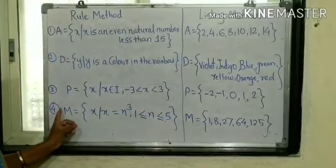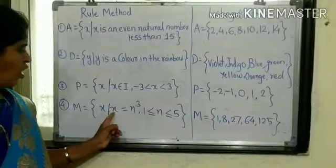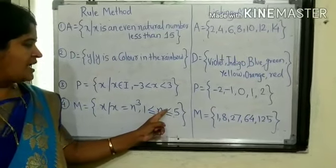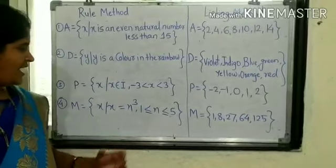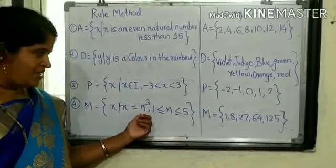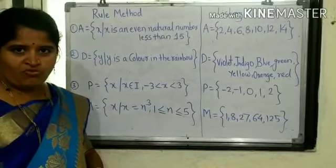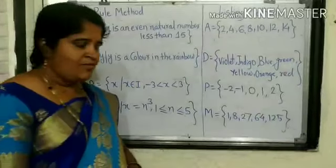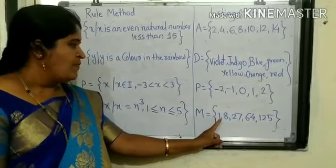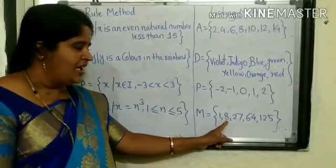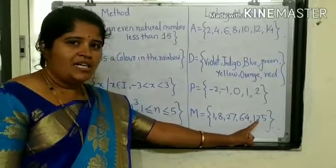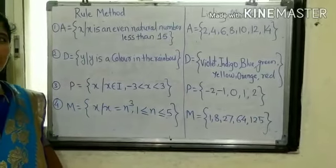The fourth example is of set M. M = {X | X = N³, 1 ≤ N ≤ 5}. It means the property of the variable is that it represents the cubes of natural numbers between 1 and 5. The elements of this set by listing method are: M = {1, 8, 27, 64, 125}, since the cube of 1 is 1, cube of 2 is 8, cube of 3 is 27, cube of 4 is 64, and cube of 5 is 125.